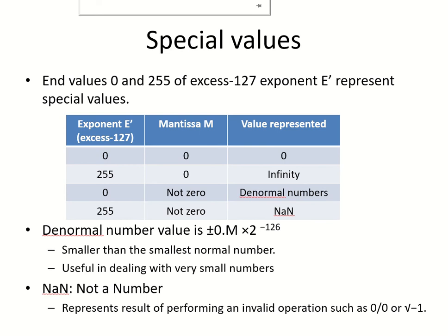There are some special values which are used to represent certain numbers. These zero and 255 end values are in the excess minus 127 representation. If the exponent is zero and the mantissa is M, the value that is represented is zero.